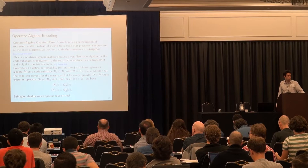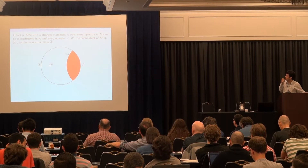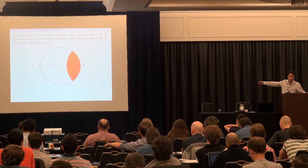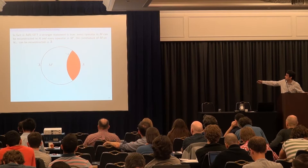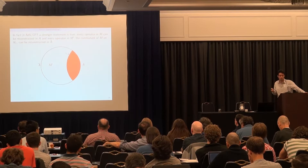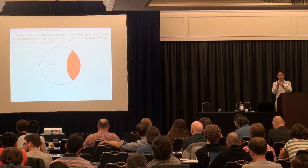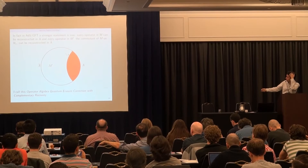In actual ADS-CFT, more is true. We can think of the algebra M as the set of bulk operators inside the wedge associated to boundary region A. Not only can all those operators be represented on A — that was subregion duality — but also the commutant algebra M' (all operators on the code subspace commuting with everything in M) can be represented on the complementary region A-bar. The degrees of freedom in the code space split: M goes to A, and its commutant goes to A-bar. I call this operator algebra quantum erasure correction with complementary recovery.